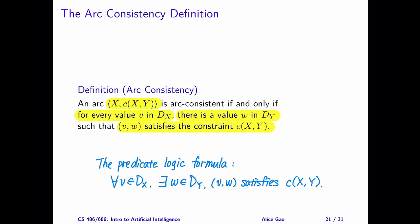In predicate logic, the definition becomes the following. For all v in the domain of x, there exists w in the domain of y, such that v and w satisfy the constraint c. We have mixed quantifiers here. The first one is universal, and the second one is existential. When we verify the statement, we need to consider the quantifiers in order. First, we need to pick a value v in the domain of x. Then, we need to find the value w in the domain of y, such that the two values satisfy the constraint.